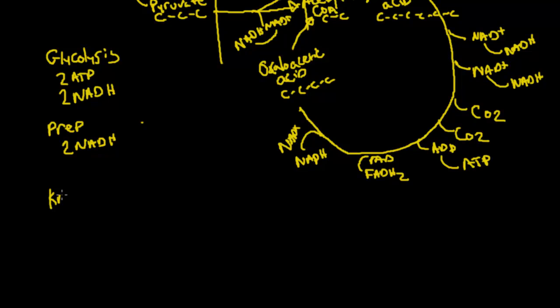And then for the Krebs cycle, we end up getting 2 ATP, 6 NADHs, and 2 FADHs. And these are going to be important in the electron transport chain, especially these NADHs and these FADHs.